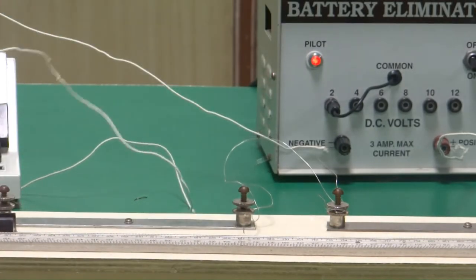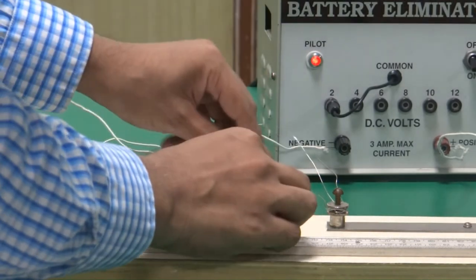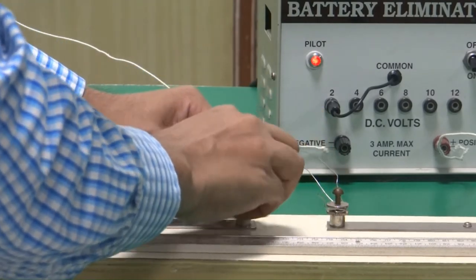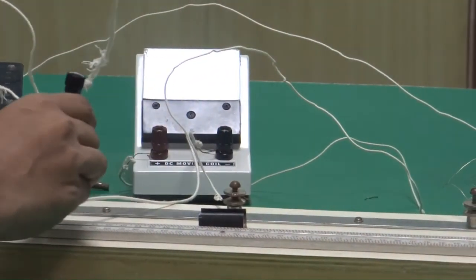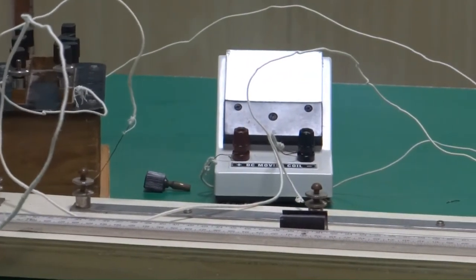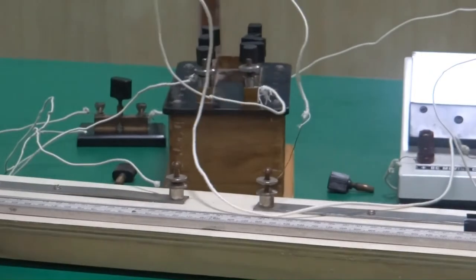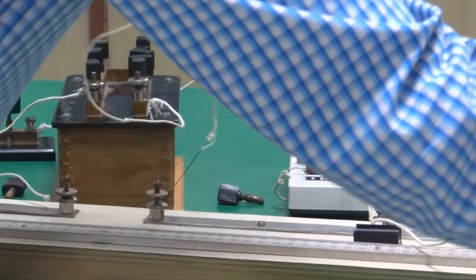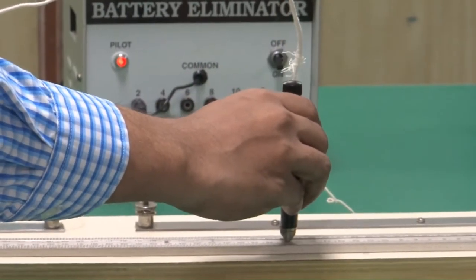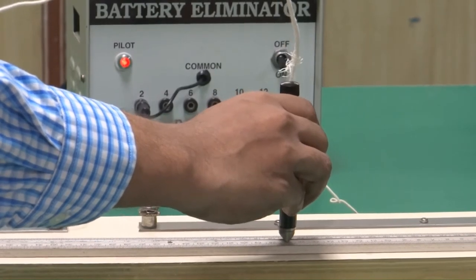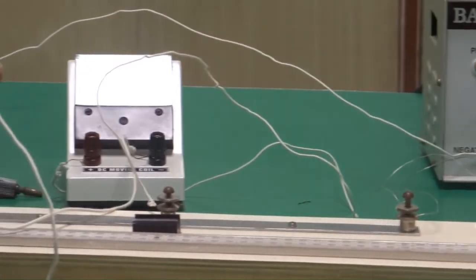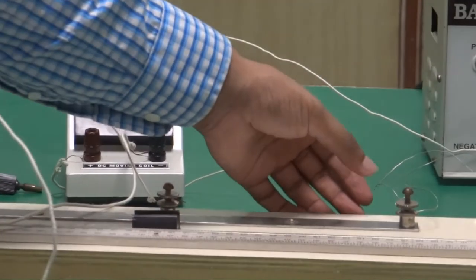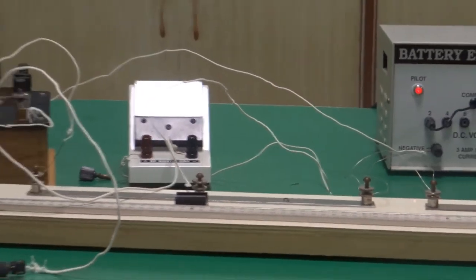Now the two wires x1 and x2 are in parallel. Ensure that the connections are tight. Now again use the jockey and try to find what is the value of the null point. Okay, before that switch on the key. Check the deflection is on the opposite side and determine the value of the null point. It is coming out to be somewhere around 84. Now repeat this for three sets of readings. In this way we have determined the value of the parallel resistance of x1 and x2.